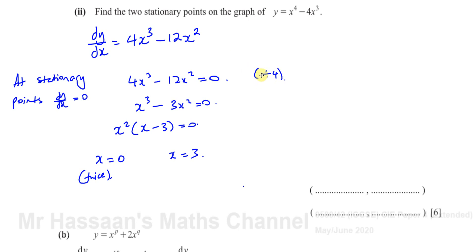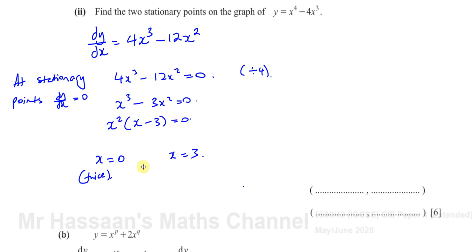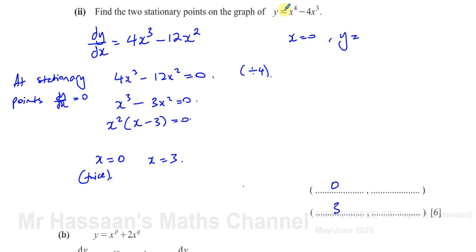That's something we can go into later — not really necessary right now. So there we have the x values. But it says find the stationary points, meaning the coordinates. In the answer space they've got places for x and y values. When x is 0, we can see that y is also equal to 0 — you have 0 to the power of 4 minus 4 times 0 to the power of 3 — so that's the origin.